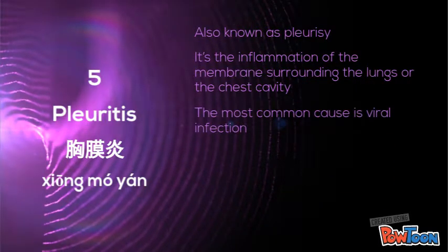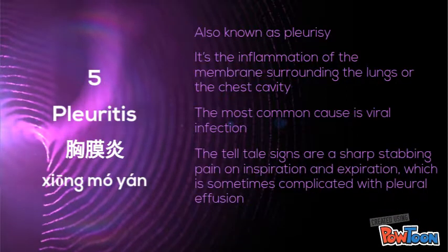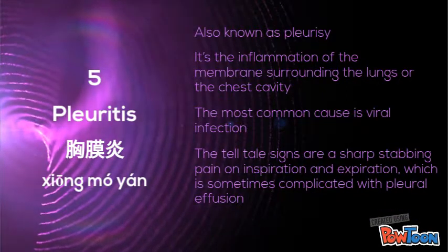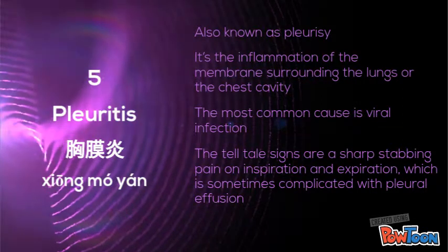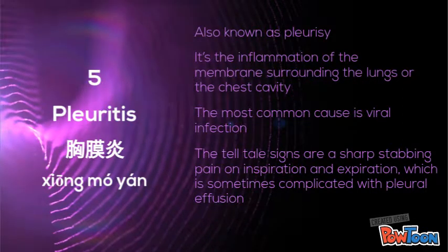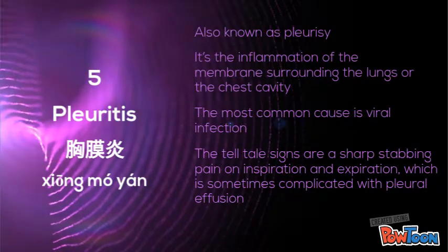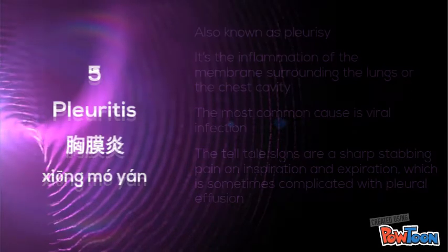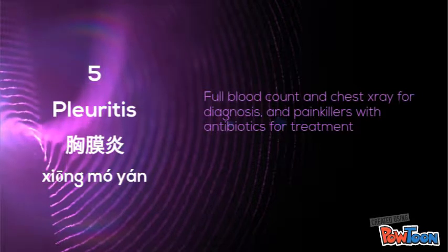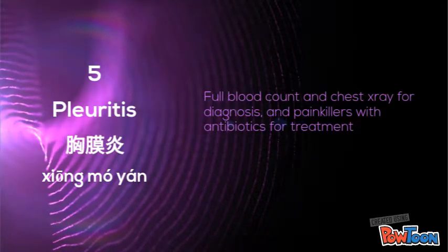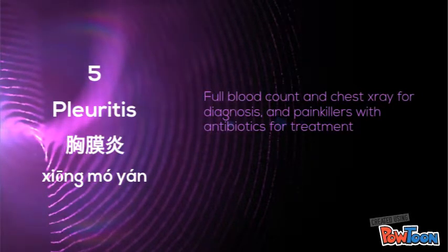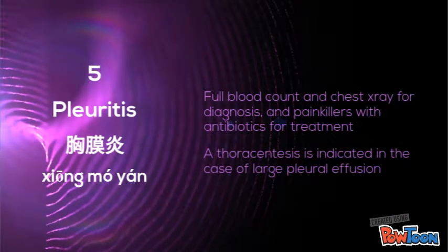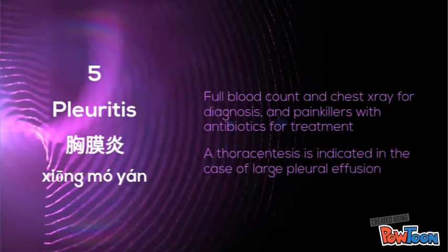The most common cause is viral infection. The tell-tale sign is a sharp stabbing pain on inspiration and expiration. The pleural fluid can fill up the pleural cavity, which needs to be drained to prevent atelectasis. Chest X-ray and blood tests are used for diagnosis, and painkillers and codeine-based cough syrups for treatment to reduce the pain. In case of extra pleural effusion, you can also do a pleural synthesis.